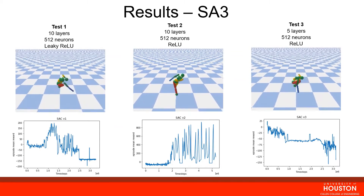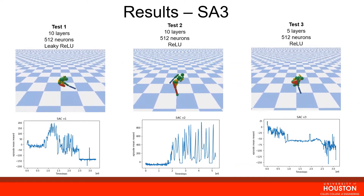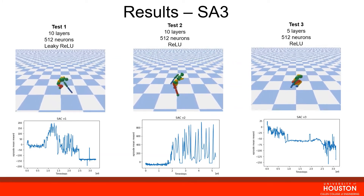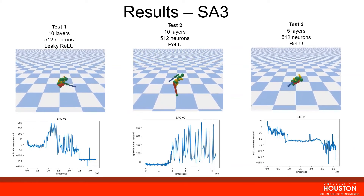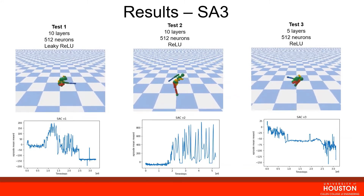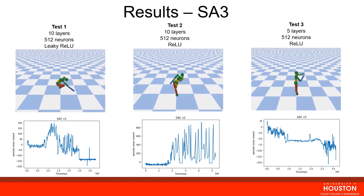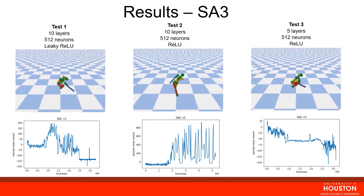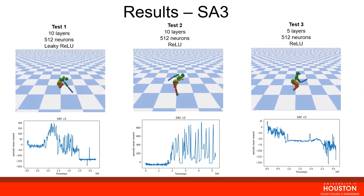Comparing test two to test three, they differ in the number of layers and depth of the policy neural network architecture. Test two has 10 layers while test three has 5 layers. We can gather that having a deeper network is more beneficial, as test two shows better performance even though the robot does not yet learn to walk. Future tests with deeper networks would be needed to see how much performance could be improved for this algorithm.